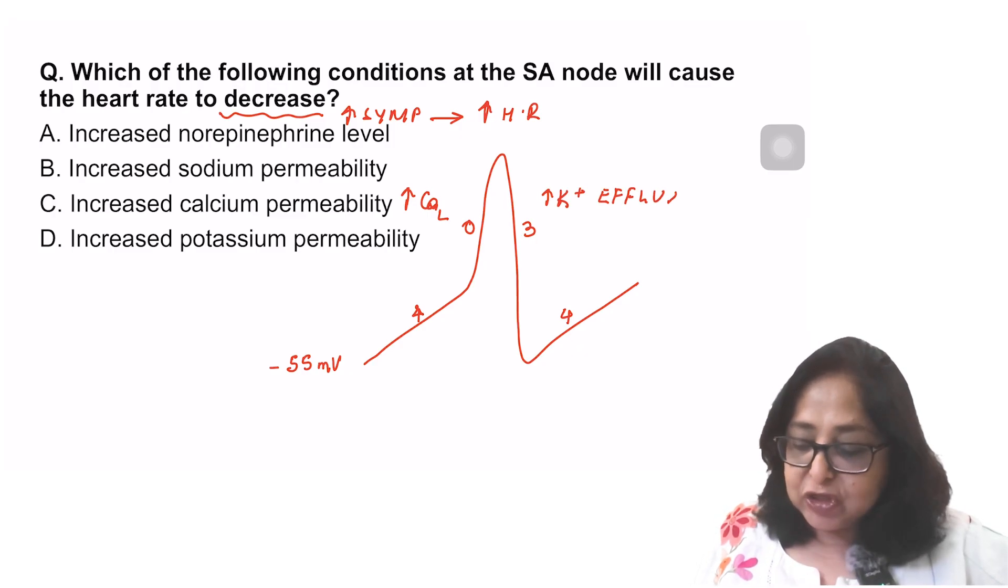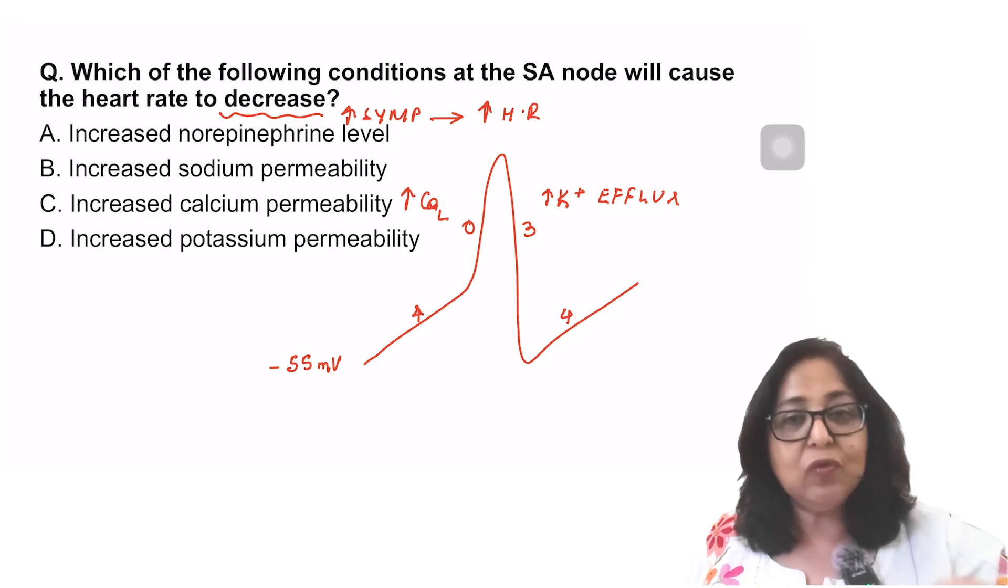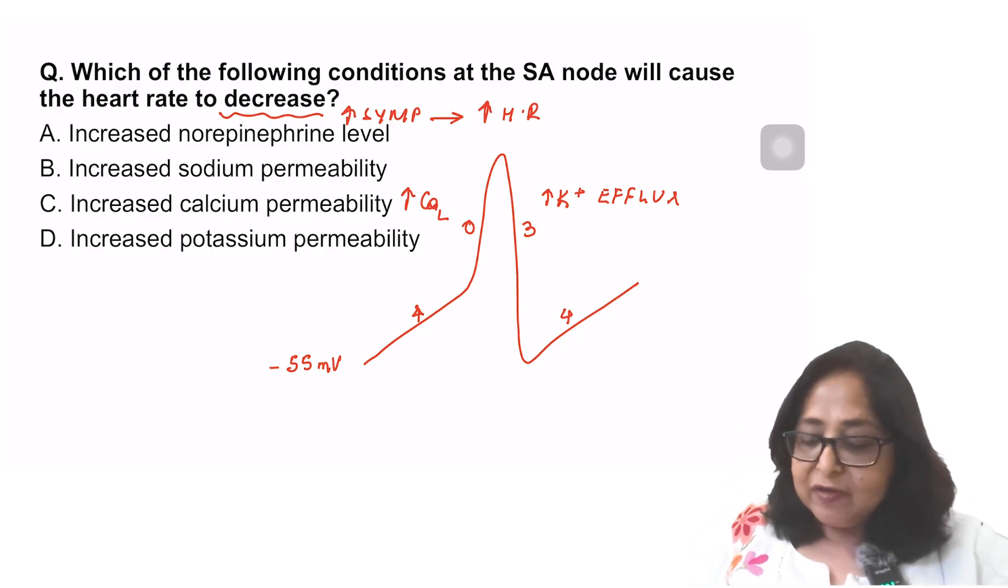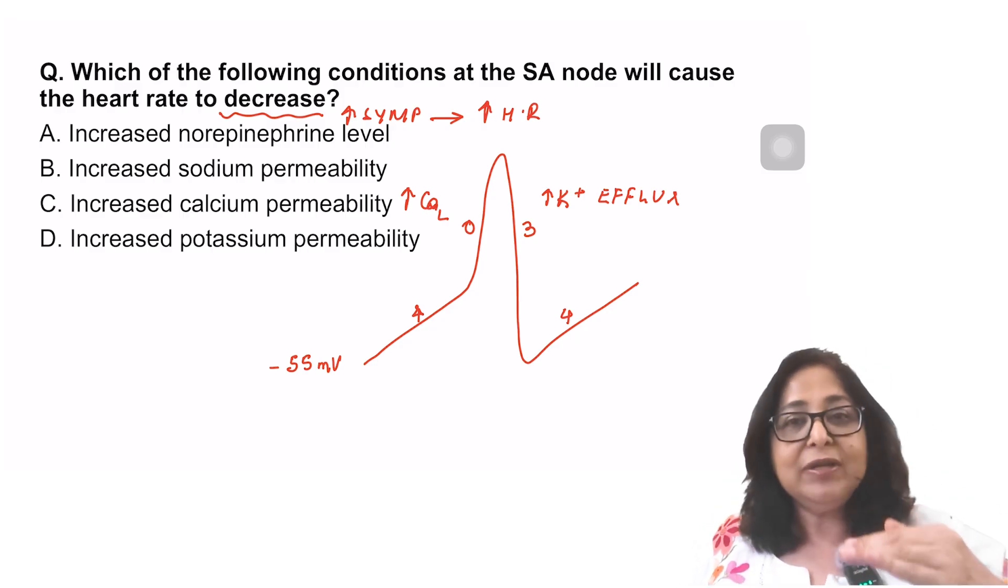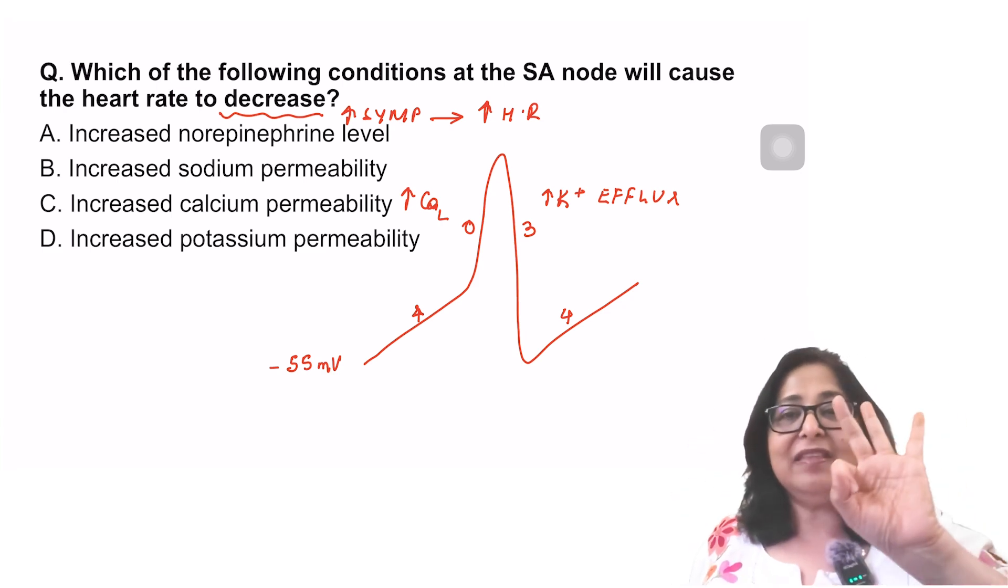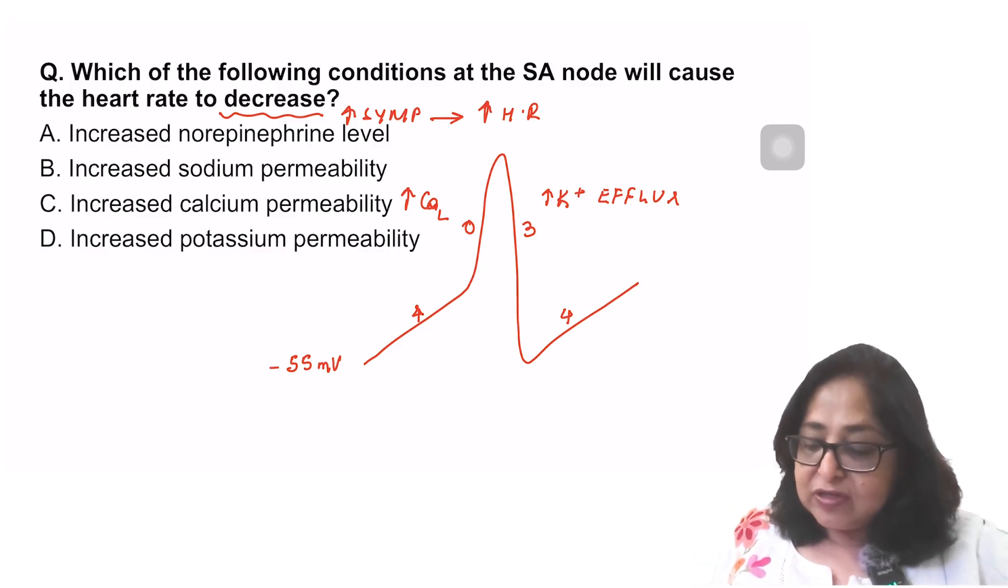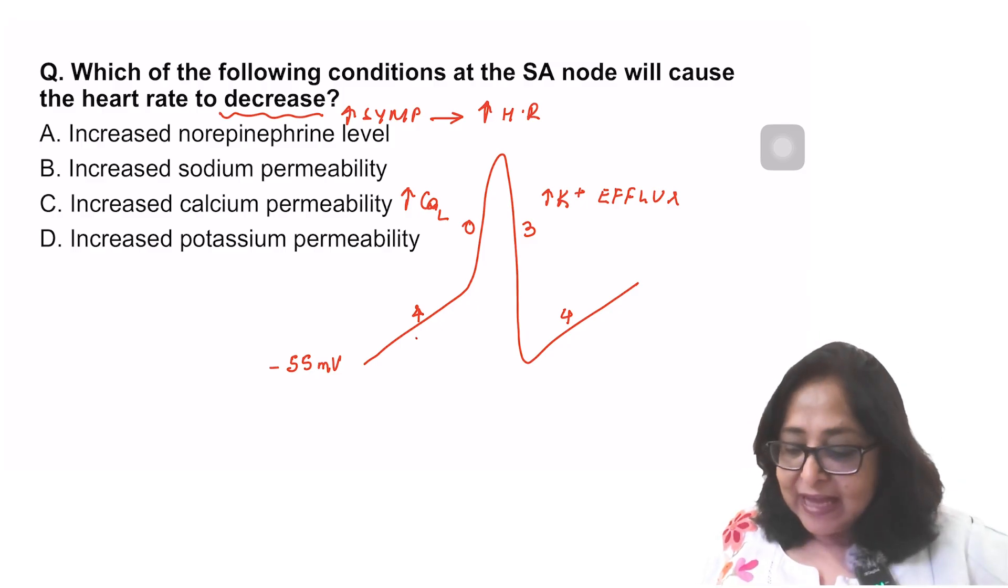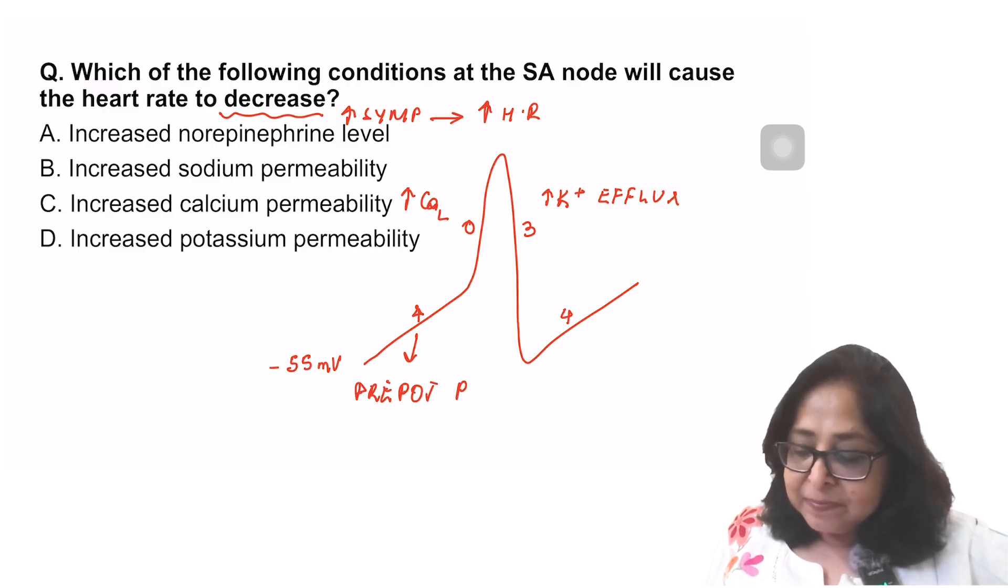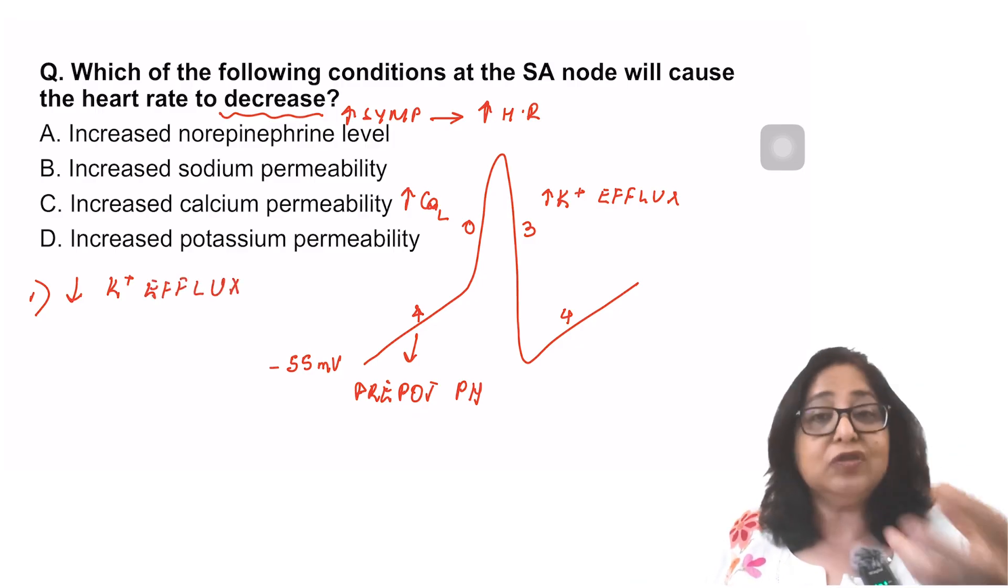Phase 4, which is known as the pre-potential phase, the potential goes from resting potential of minus 55 millivolts to the firing level of approximately minus 45. How does it go from more negative to less negative? By gaining positive charge. There are three mechanisms by which it gains positive charge. Number one, there is a decrease in potassium efflux. The potassium efflux which occurs in phase 3 decreases in phase 4, so gain of positive charge.